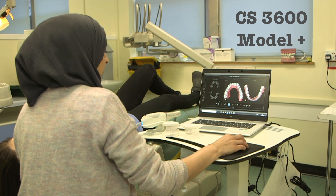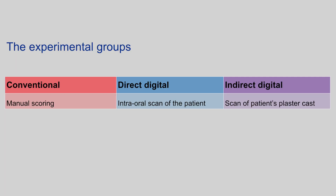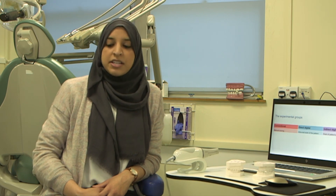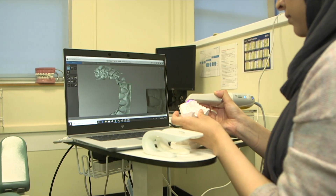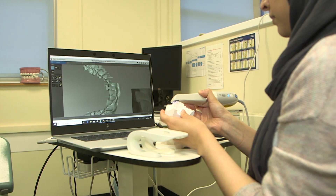We decided to investigate the validity of digital PAR scoring using this software system by comparing conventional manual assessment with automated scoring of digital models — using direct digital models, that is intra-oral scans of patients, and indirect digital study models, that is scans of existing plaster casts. The primary outcome was mean calculated PAR score, and the null hypothesis was that there was no difference in PAR scores between the three different scoring methods. Secondary outcomes included mean chair-side time, time taken to calculate PAR scores, as well as patients' perception of the clinical procedure.